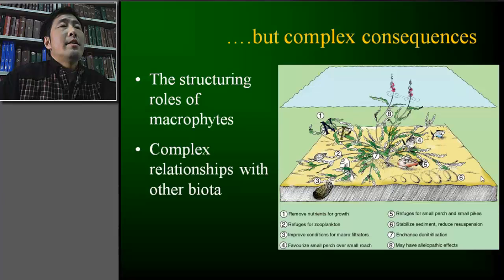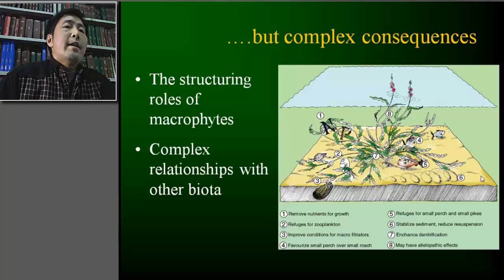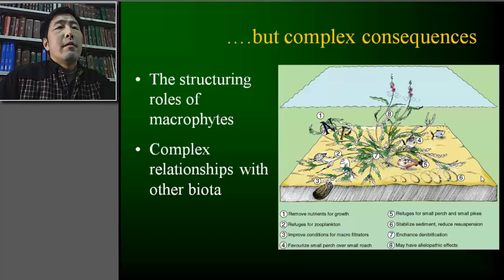Phosphorus absorption through the root system is a simple physiological process that satisfies macrophyte normal life. However, this absorption usually brings complex consequences, mainly because of the important structural roles of macrophytes in shallow lake ecosystems. In these ecosystems, macrophytes usually have complex relationships with other biota, especially their microbiota.